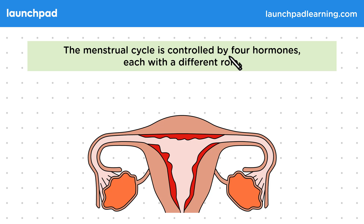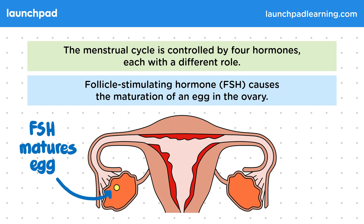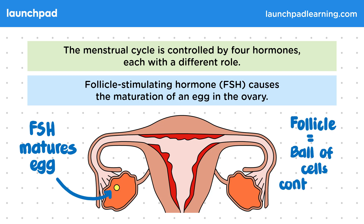The menstrual cycle is controlled by four hormones, each with a different role. Follicle-stimulating hormone, or FSH, causes the maturation of an egg in the ovary. This image shows the egg maturing in the ovary because of the FSH. For the exam, you do need to know the full name of this hormone — follicle-stimulating hormone — as well as its role. A follicle is a ball of cells which contains the egg cell. You don't need to recall what the follicle is for the exam, but knowing what it is really helps to remember what FSH does.